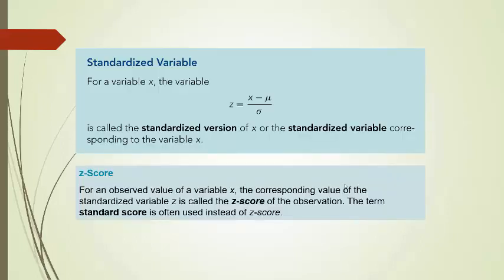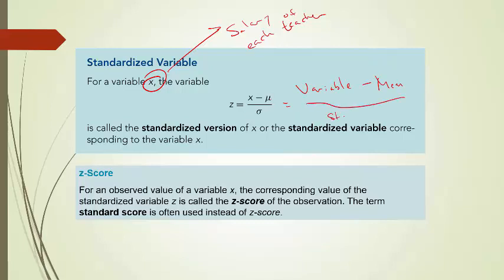And this calculation is what's called the standardized variable or a z-score. So for any variable x, and in our problem here, this x will be the salary of each teacher. The random variable, or z, the variable z is equal to x minus mu divided by sigma, which is the variable minus, remember this is the mean, divided by sigma is the standard deviation.